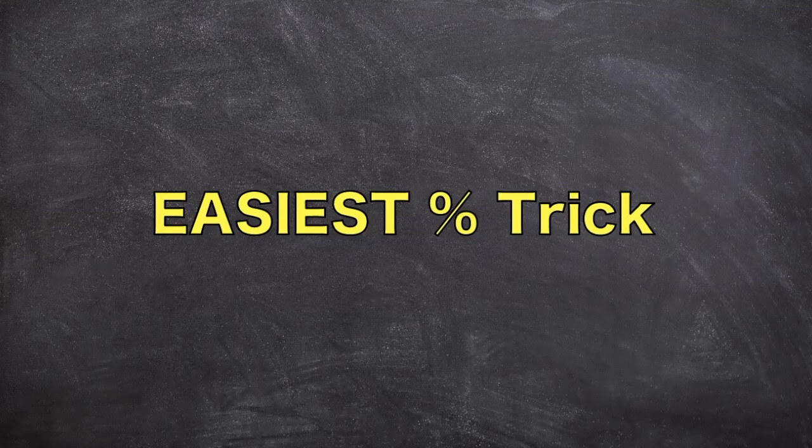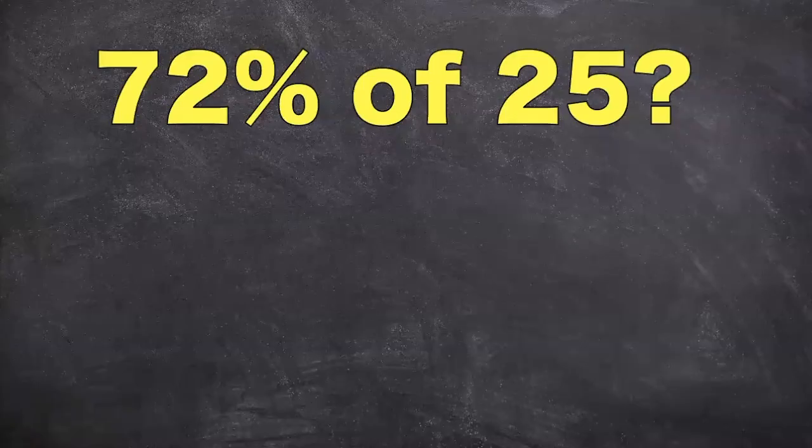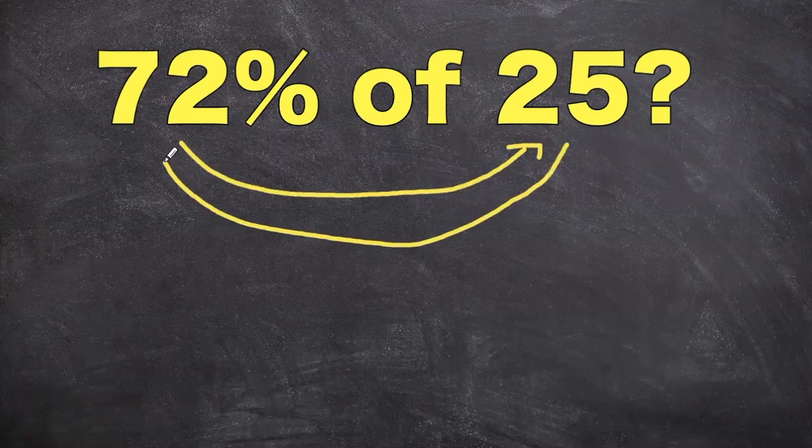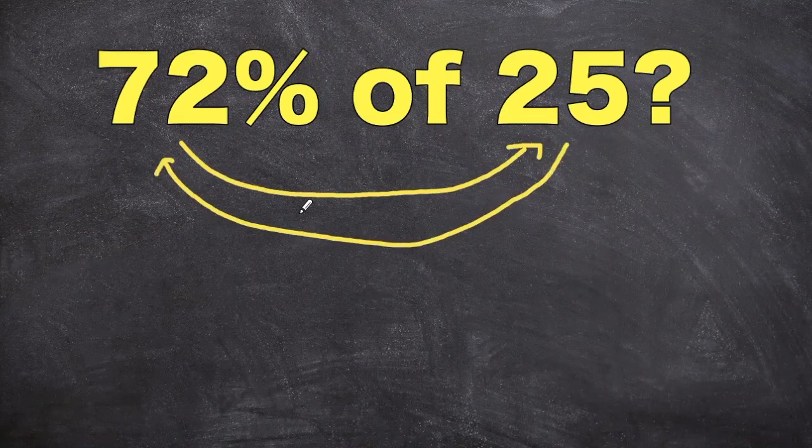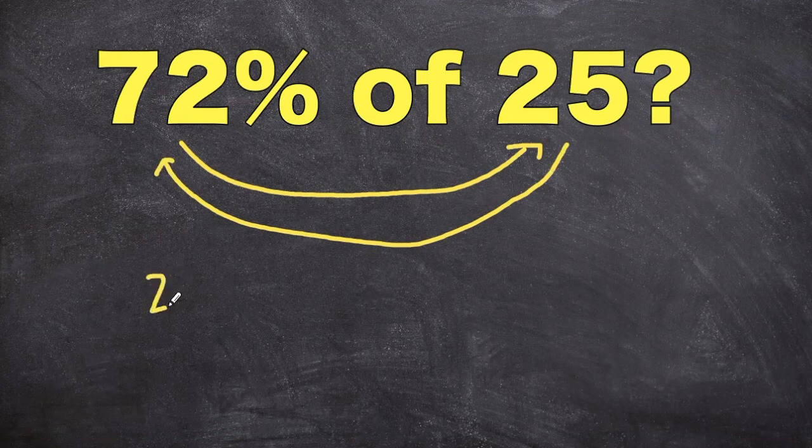Okay guys, I know you've been waiting for this. This is the easiest and coolest percentage trick you've never learned in school. The easiest and coolest percentage trick is to reverse the two numbers order. So instead of taking 72% of 25, we can think about the problem as taking 25% of 72.